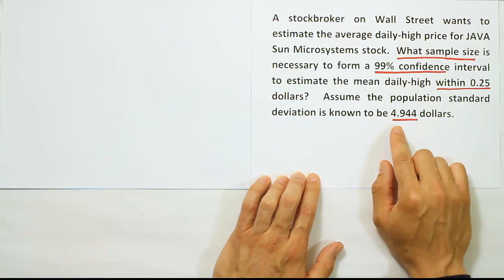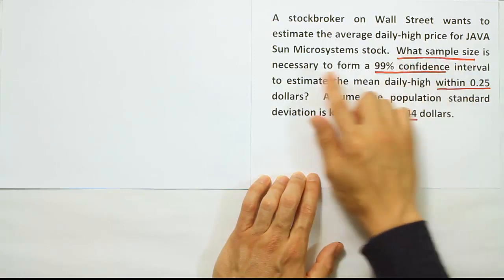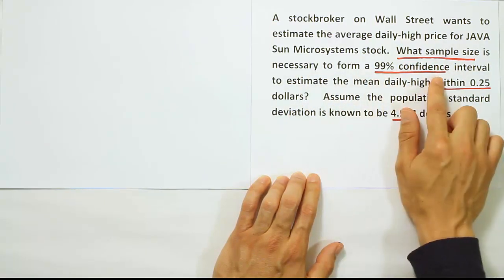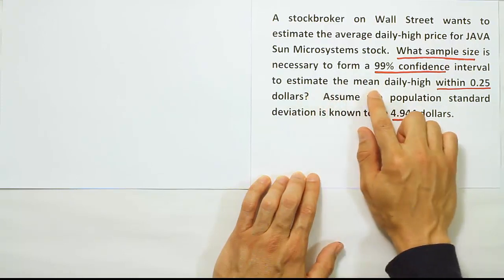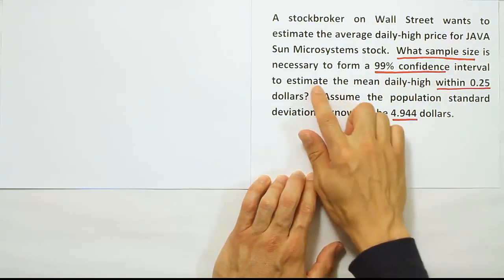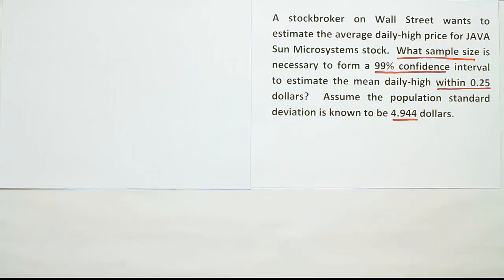The first thing I want to point out in this problem is the key phrase: what sample size is necessary to form a 99% confidence interval to estimate the mean. So we're looking for a sample size here to estimate the mean. If we want to figure that out, it's pretty straightforward. We're going to set up the following formula.